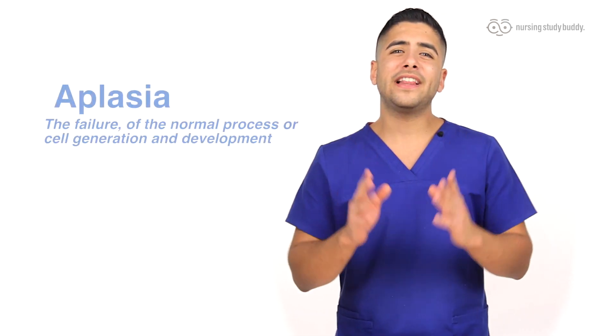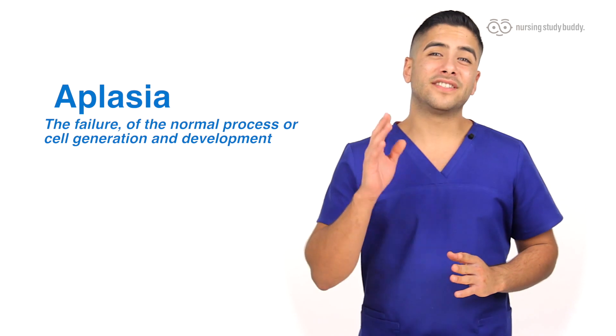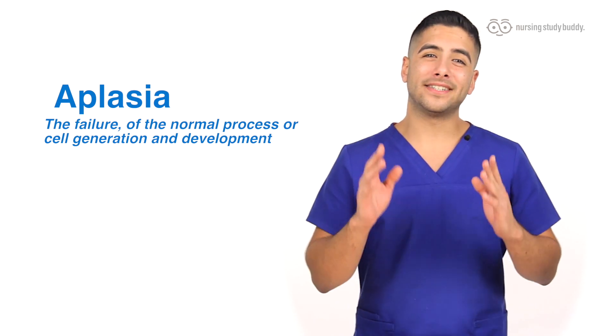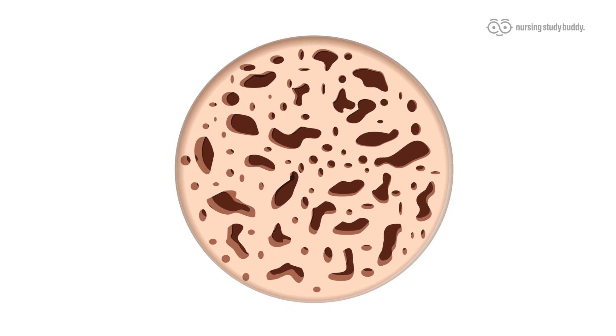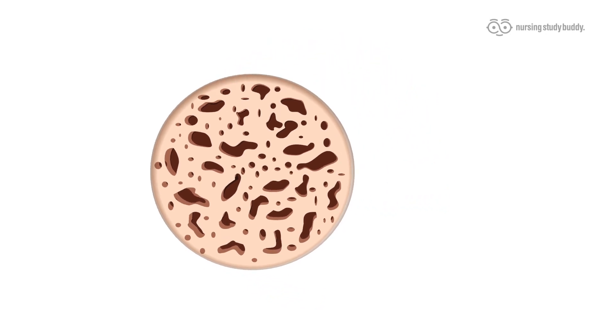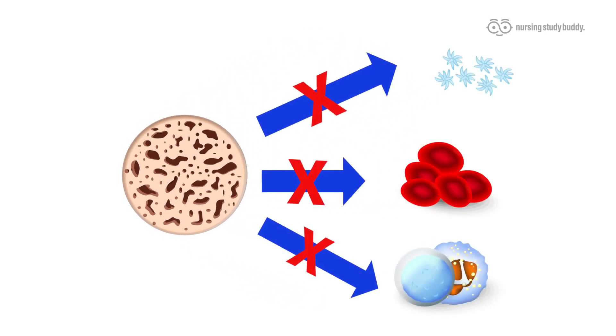Aplastic anemia is also known as aplasia, or the failure of the normal process of cell generation and development. This happens when the marrow responsible for hematopoiesis is defective, causing a deficiency in the production of RBCs.